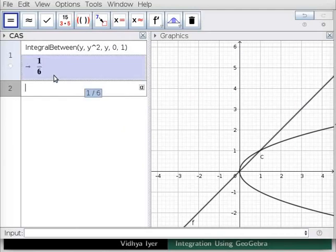A value 1 divided by 6 appears below the entry. This is the area between the parabola and the line from (0, 0) to (1, 1). Let us now express y in terms of x for both functions.